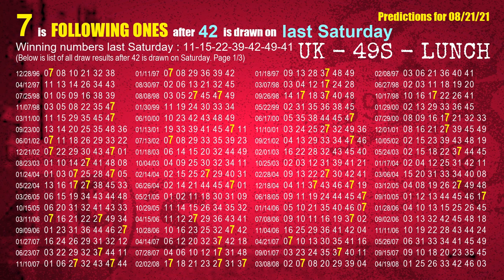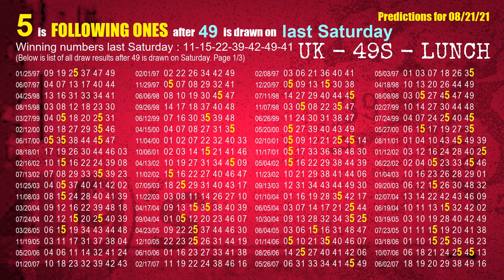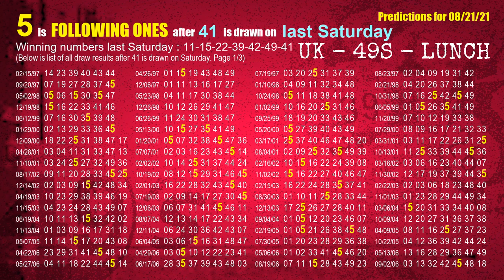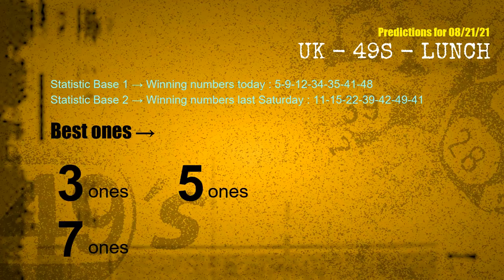The fifth winning number last Saturday is 42 — the most frequently following units digit is 7 when 42 is the winning number on last Saturday. The sixth winning number last Saturday is 49 — the most frequently following units digit is 5 when 49 is the winning number on last Saturday. The booster winning number last Saturday is 41 — the most frequently following units digit is 5 when 41 is the winning number on last Saturday. According to the statistics above, the frequent following ones are three-ones, five-ones, and seven-ones.